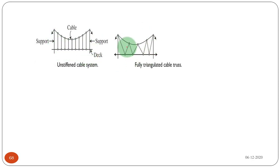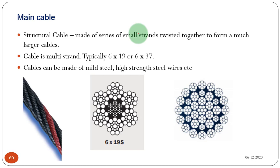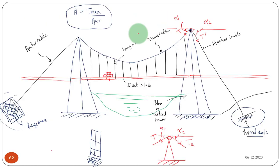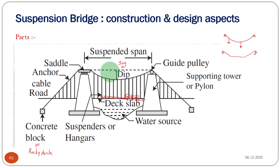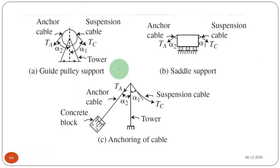Another form of unstiffened cable system uses no stiffening girders — instead of vertical suspenders, a triangular truss form is provided. This is also an unstiffened truss bridge. In a suspension bridge, all the load is taken by the main cable. You can imagine that for a long-span bridge of maybe one kilometer, the tensile force in the cable will be in the order of tons.